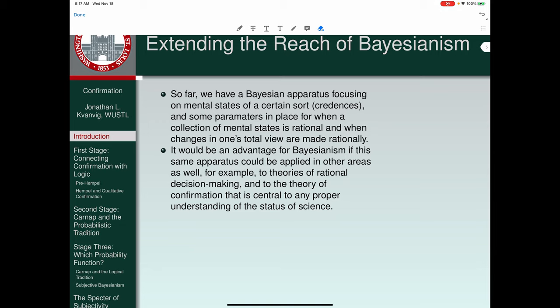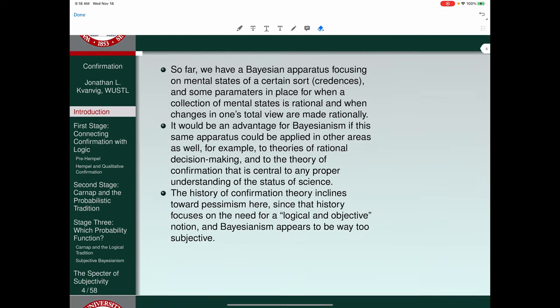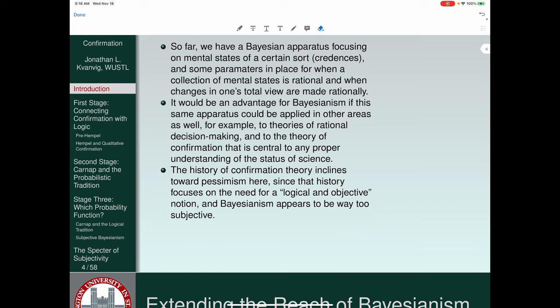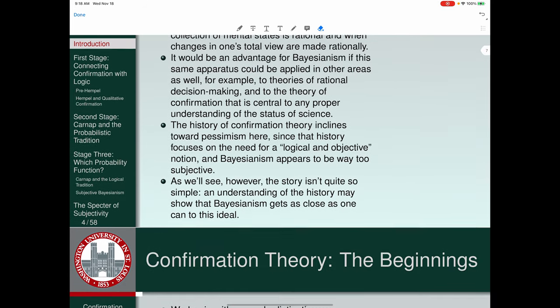It would be an advantage for Bayesianism if this same apparatus could be applied in other areas as well, for example, to theories of rational decision-making or to a theory of confirmation that's central to any proper understanding of the status of science. The history of confirmation theory inclines toward pessimism here, though, since that history focuses on the need for a logical and objective notion that's in quotes because it's an often repeated phrase characterizing the notion of confirmation that was being sought.